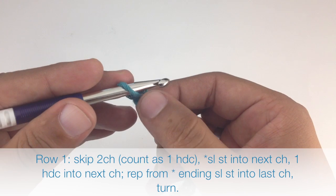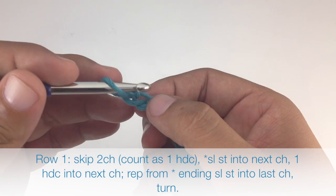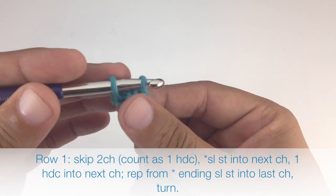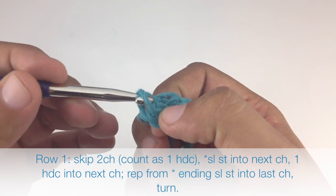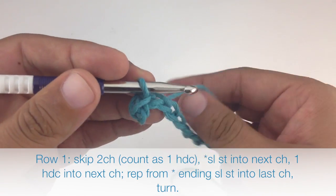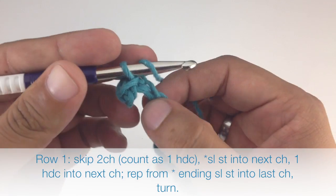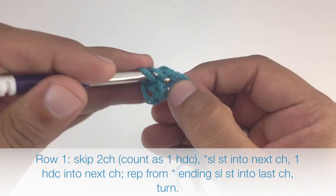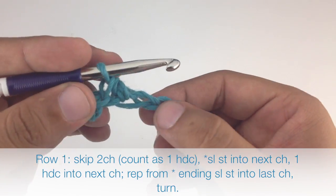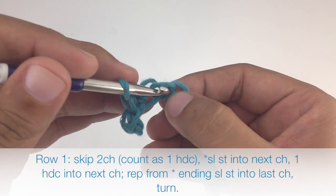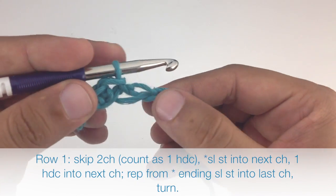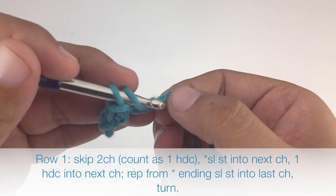Row 1: We're going to begin by skipping the first two stitches in our row and doing a slip stitch into the next stitch. Insert your hook, draw through, and draw through the loop on your hook. Then start the repeat by doing a half double crochet into the next chain stitch, and finish the repeat by doing a slip stitch into the next stitch. Continue repeating this sequence until the end of the row.